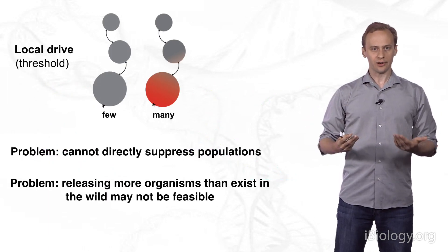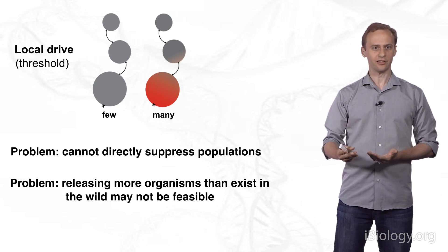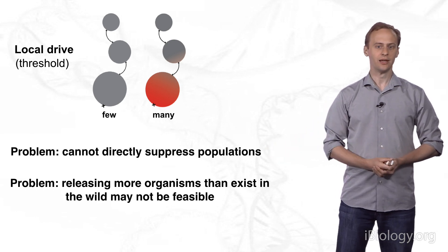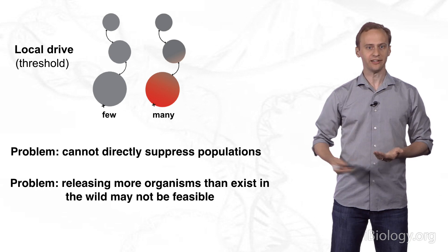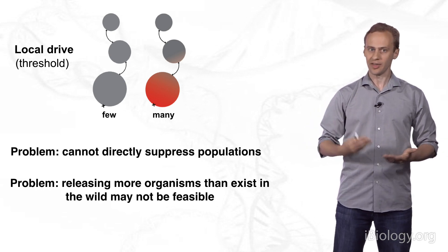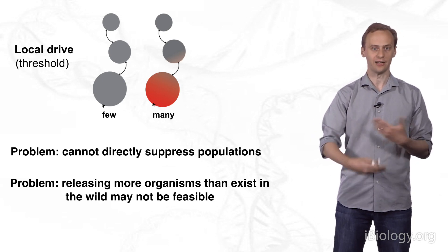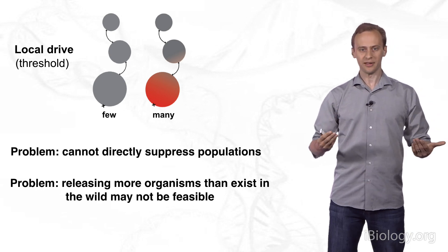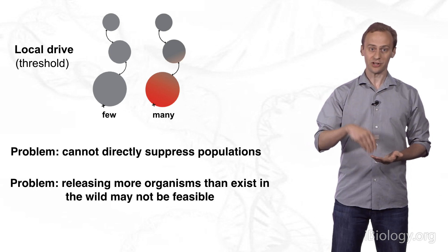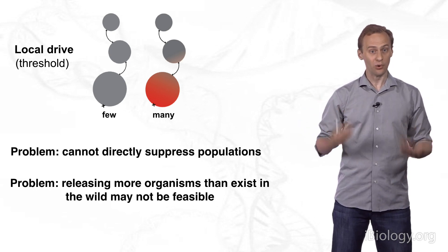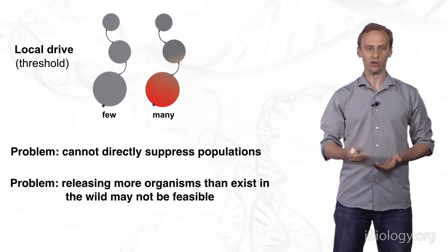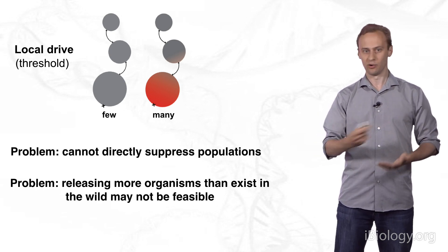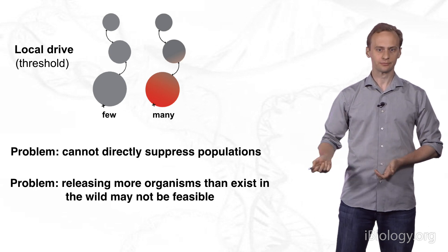These threshold drives are extremely compelling precisely because they're so localized. If introduced in an area, they will stay within that area because they will be actively eliminated elsewhere. The problem is that they can't be used to directly suppress populations. They can only alter them. Perhaps the bigger problem is that releasing sufficient organisms to reach a 60% frequency requires releasing more engineered organisms than normally exist in the wild in that area. And for species that are actively causing a problem, whether because they're environmentally destructive or they're pests, that may just not be feasible.